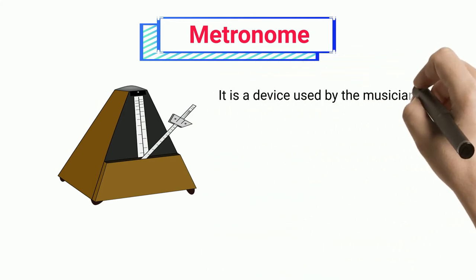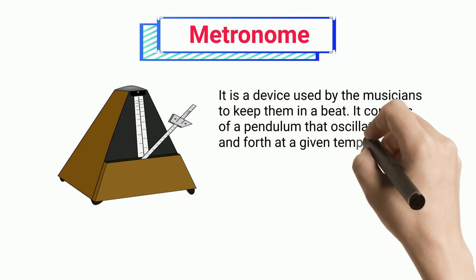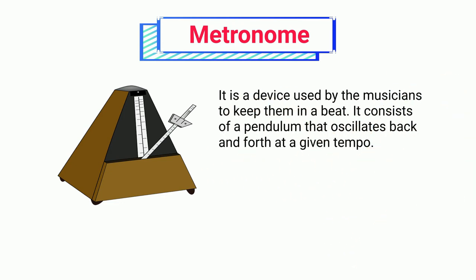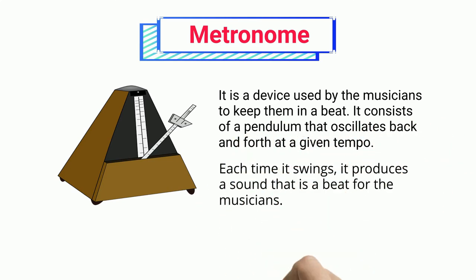Metronome: It is a device used by musicians to keep them in a beat. It consists of a pendulum that oscillates back and forth at a given tempo. Each time it swings, it produces a sound that is a beat for the musicians.